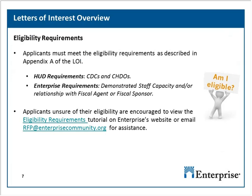In order to be eligible to apply, applicants must meet the requirements described in Appendix A of the LOI, found on page 53 of the document. This covers both HUD requirements and Enterprise's own requirements for demonstrated staff capacity, or at least the relationship with a fiscal agent or fiscal sponsor. Applicants unsure of their eligibility can go to our website to click on the tutorial or email us at rsp@enterprisecommunity.org, which goes to our entire Grants and Contracts team.